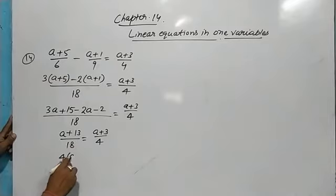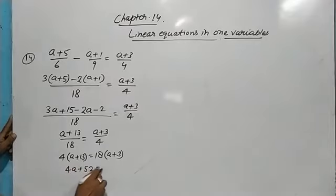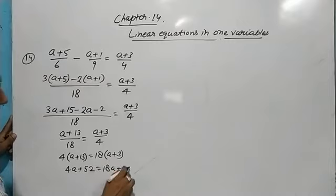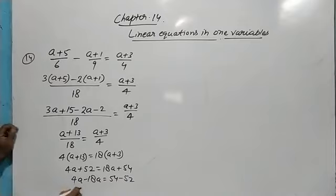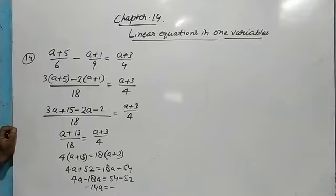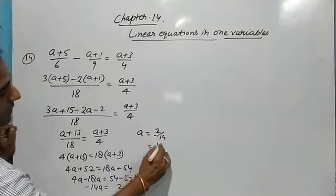Cross multiply: 4(a + 13) = 18(a + 3), giving 4a + 52 = 18a + 54. So 4a − 18a = 54 − 52, which gives −14a = 2, so a = −2/14 = −1/7.